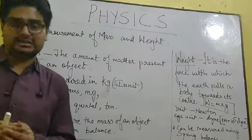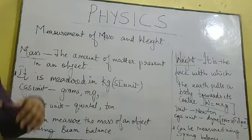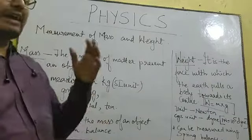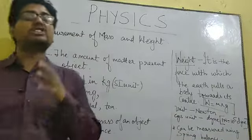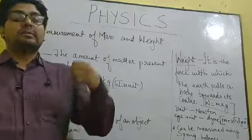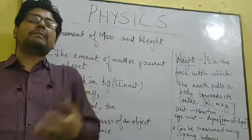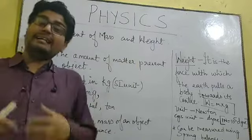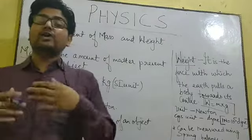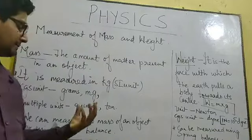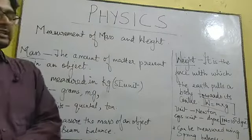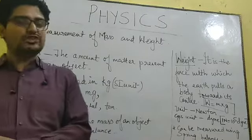We can use a beam balance to measure the mass of an object. As discussed in the first lecture, we used a beam balance to measure the mass of rice. So a beam balance is the device used to measure the mass of an object.